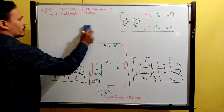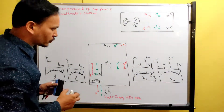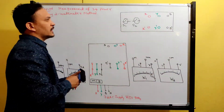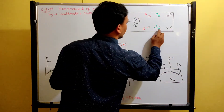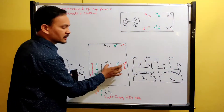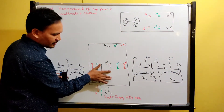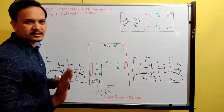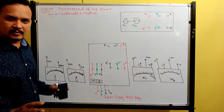When measuring 3-phase power by the 2 wattmeter method, you need not connect the bottom terminals R', Y', B' to the bottom of the board — those are not required.